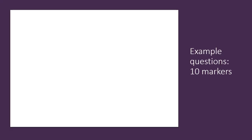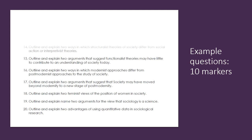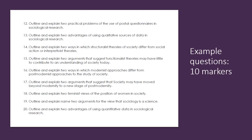Before we conclude, here are some example questions. These are 10-mark questions — you would get these in Paper 1, which is the education paper. They are all focused around 'outline and explain.' For example: outline and explain two practical problems of the use of postal questionnaires; or outline and explain two arguments that suggest society may have moved beyond modernity to a new stage of postmodernity. You should answer these in a PERC format — no need for an introduction, no need for a conclusion.